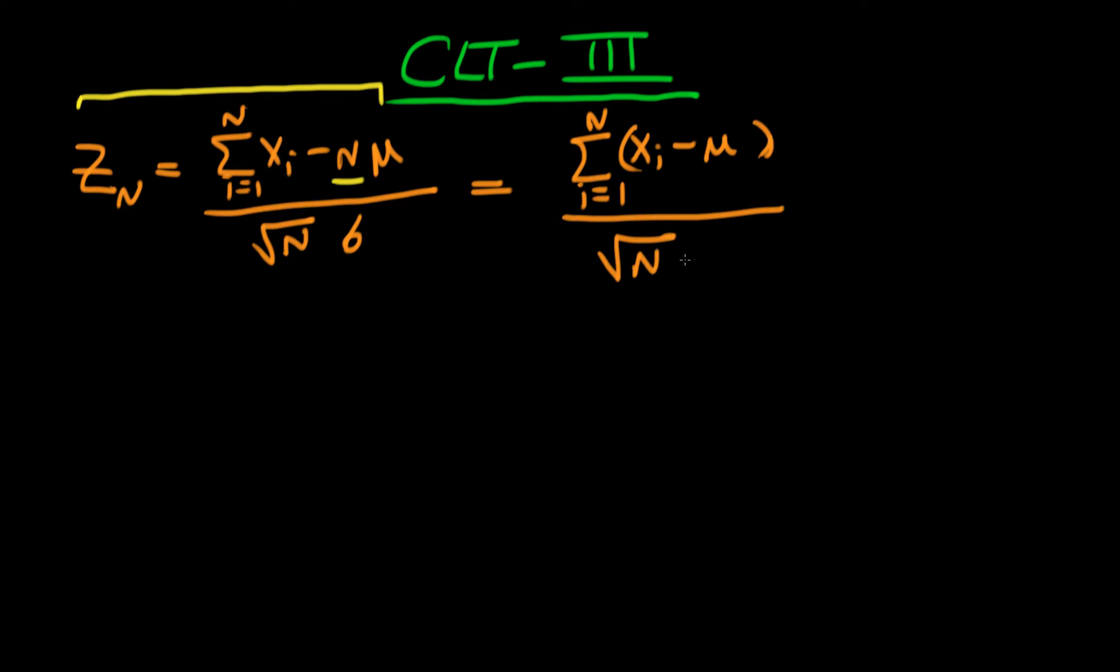And then we're dividing that through by root n times sigma. Well this root n times sigma is completely without an index of summation, so we can just write this out as being contained within our summation sign: the sum from i equals 1 to n of xi minus mu all divided by root n times sigma.